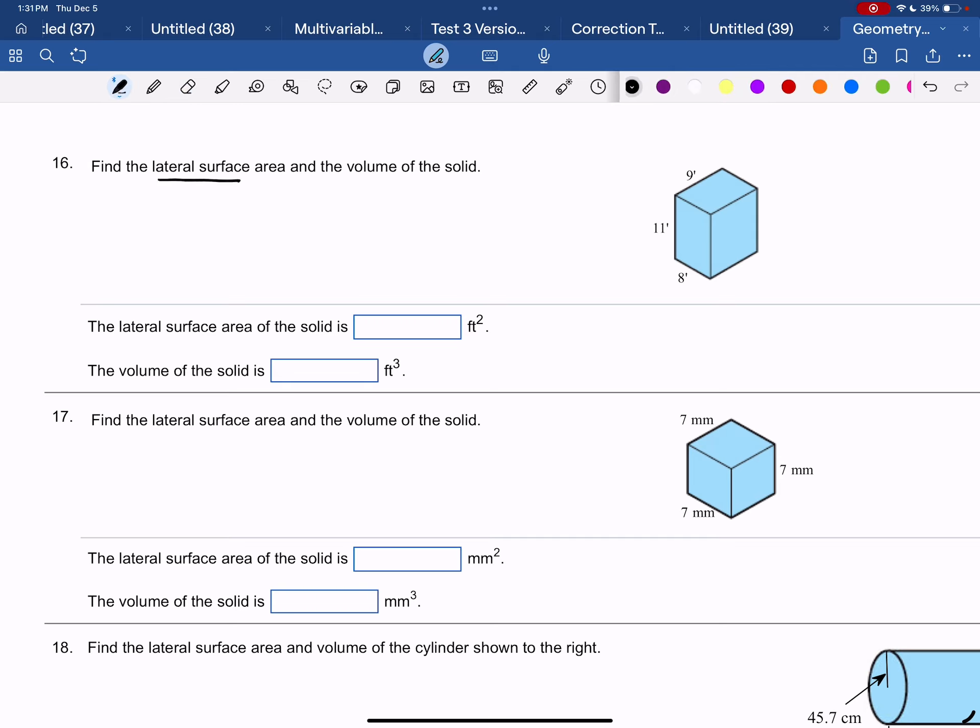Lateral surface area means don't include the top and bottom. So the formula for the rectangular solid's lateral surface area is 2 times width times height plus 2 times length times height.